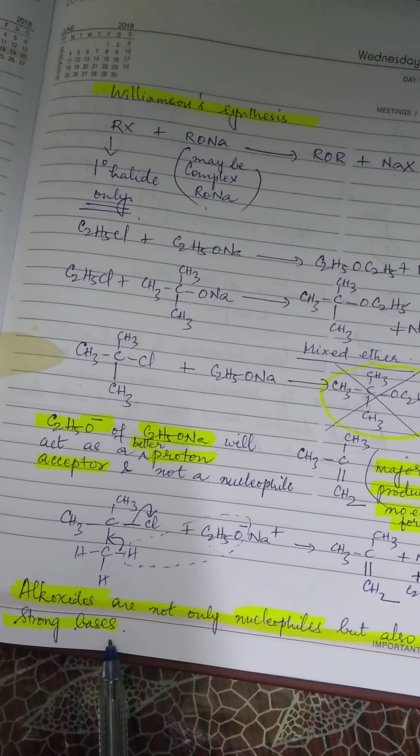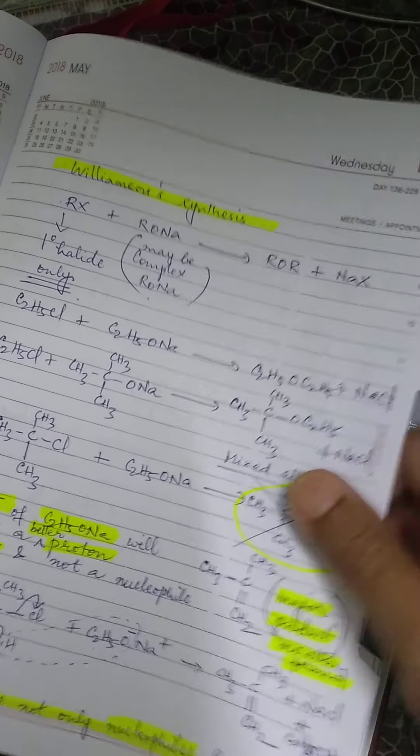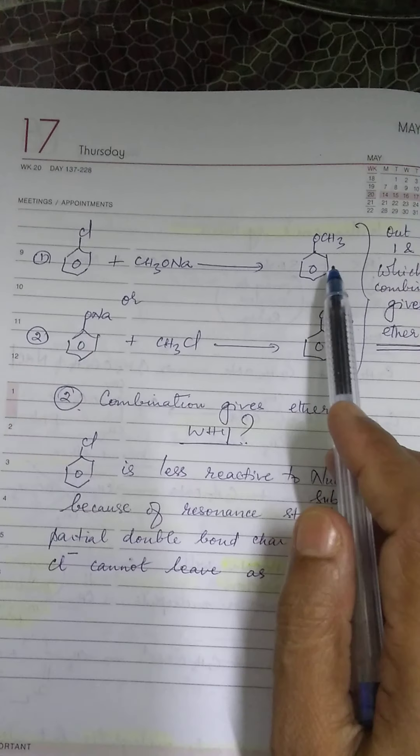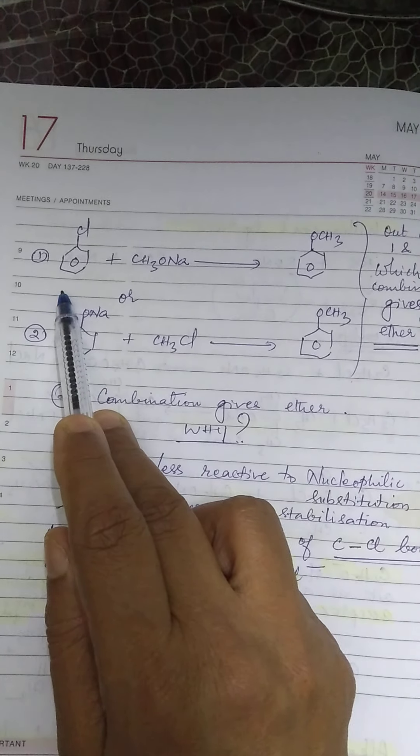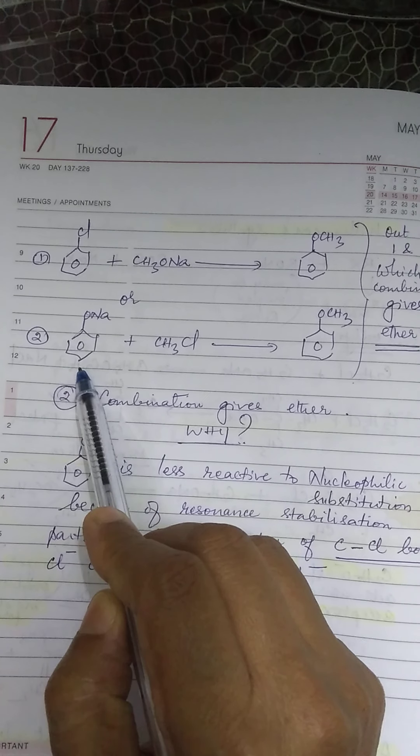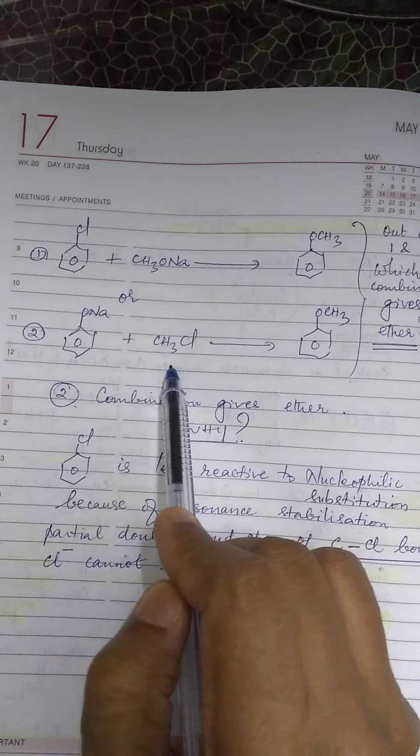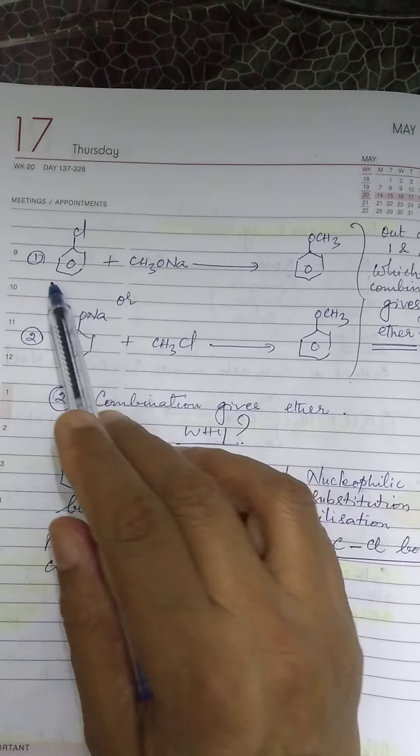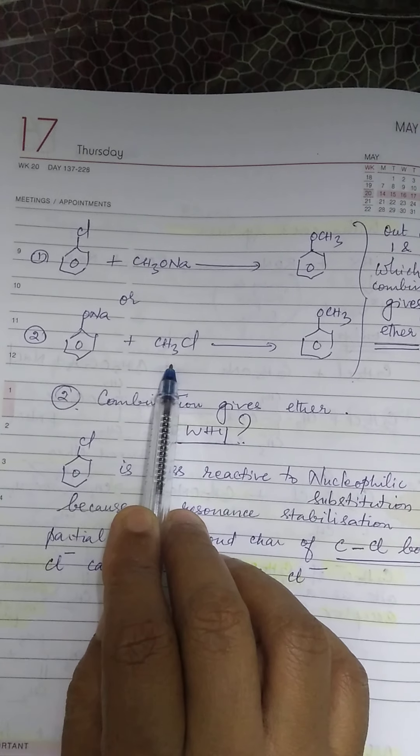Now, supposing if I ask you, you have to prepare methoxy benzene. And I have given you chlorobenzene and CH3ONa and C6H5ONa and CH3Cl. Out of these two combinations, which one will give you this? Whether this is a better combination or a perfect combination? Or is this a perfect combination?